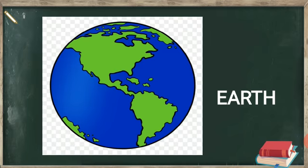This is earth. Yeh earth hai — it is round in shape and the color of the earth is blue. Earth par hum sab log rehte hain — we live on the earth. So the color of the earth is blue. Aaj aap sab apne papa mummy ko batayenge ki ham saare log earth par rehte hain.